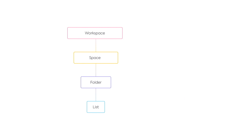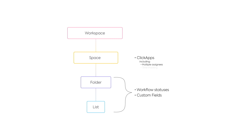This gives you multiple levels of organization and allows you to have specific settings and customization for each area. Lists and folders can have their own workflow statuses and custom fields, and spaces have extra features called Click Apps which can be turned on and off per space. Some handy ones are multiple assignees, time tracking, and priorities.